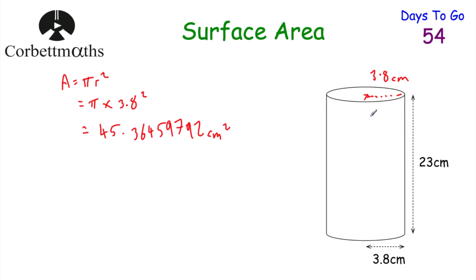So the surface area will need to add together two of those circles, and then we also need to find the curved surface area going around the outside of the cylinder. Now if you've got a cylinder — for instance a Pringles can — and you were to cut it vertically and lay it down flat, it would be a rectangle. The length of the rectangle would be the circumference of the circle, and the width would be the height of the cylinder.